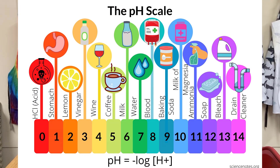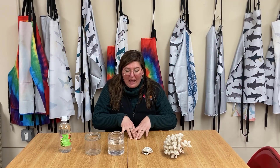Bases have a negative hydroxide ion whereas acids have positive hydrogen ions. That is how we describe them in chemistry and how we rank them based on their pH level.